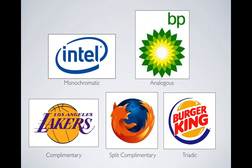Intel is a business machine — they produce computer parts, so they're more business-like. Their logo is blue and white, very simple and straightforward, a monochromatic design. This might be an example where blue is that trustworthy, businesslike color — not always the case, but in this instance it is. Firefox uses complementary orange and blue. I call this split complementary — that's when you have two warm colors paired with a cool color. It's still a complementary relationship, just with an extra bit of color in there.